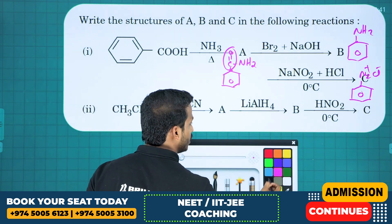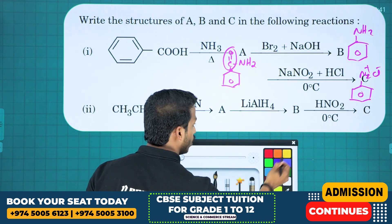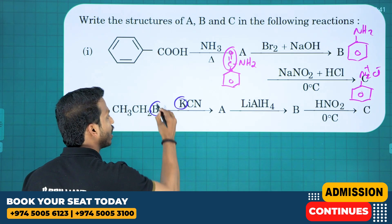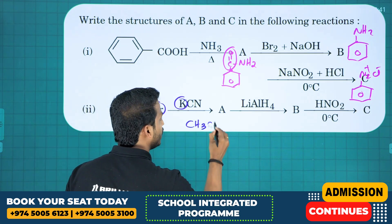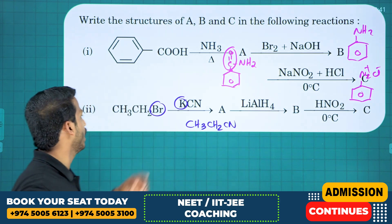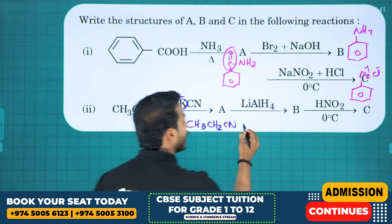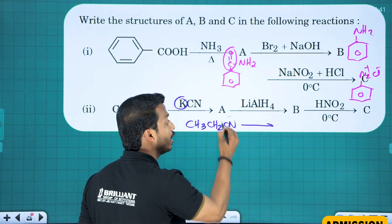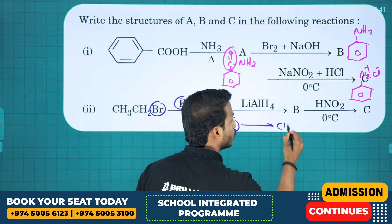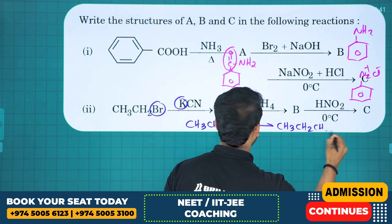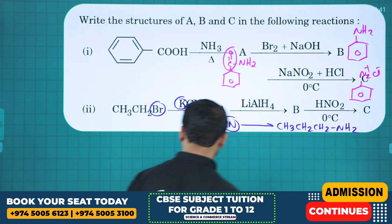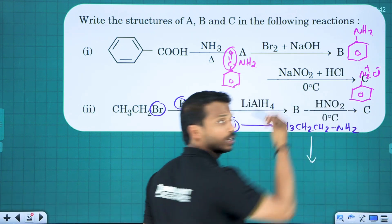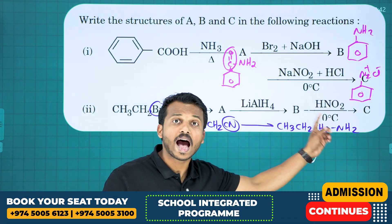Next: CH3CH2Br treated with KCN — KBr leaves and we get the cyanide CH3CH2CN, that is propanenitrile. Cyanide on reduction gives amine: CN becomes CH2NH2, so we get CH3CH2CH2NH2, which is propan-1-amine.